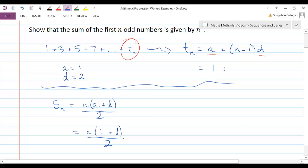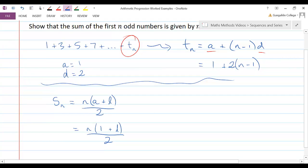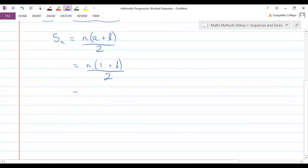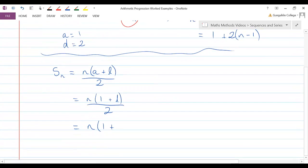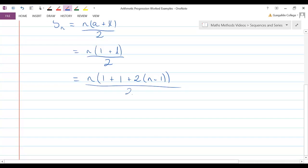a is 1. We don't know what n is, so we'll keep that as n minus 1. d is 2. Now I could write times 2 here. Looks a bit weird though, because we're used to 2 being on this side. So I will put the 2 out the front of the bracket there. So that is what my l is. I'll write that in. So this l needs to be replaced with this whole expression here: 1 plus 2 times n minus 1. And all of this is divided by 2.